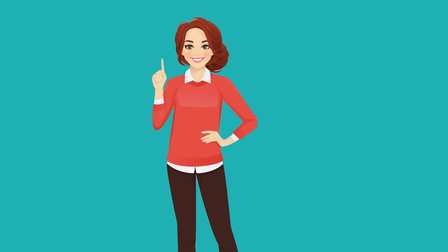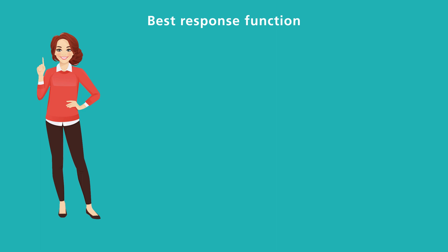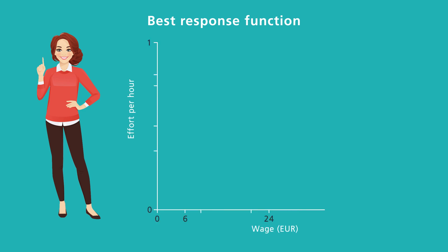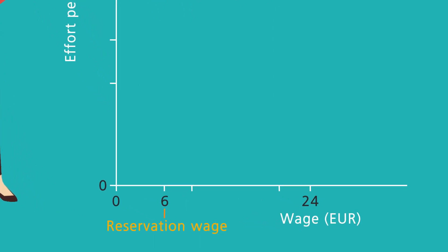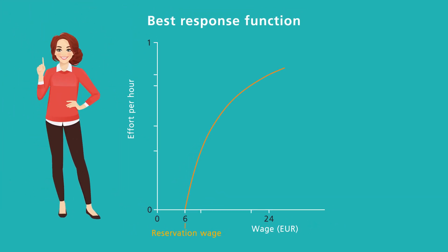She's right, and you ask her how much you would have to pay her to improve her performance. Using the best response function, she shows you how much work she would do for what hourly wage by means of a curve. The curve depends on Maria's next best alternative — the unemployment benefit, also called her reservation wage — which determines the starting point of the curve. The expected duration of unemployment results in a steeper or flatter curve. In this case, we assume an unemployment benefit of €6 per hour and an expected unemployment duration of 44 weeks.